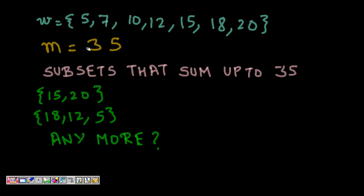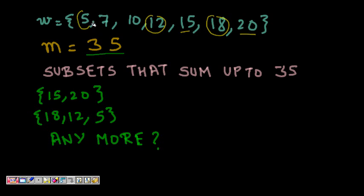For example, given numbers 5, 7, 10, 12, 15, 18, and 20 with sum equal to 35, we need to find if any subset sums to 35. By inspection, 15 and 20 sum to 35, and 18, 12, and 5 also sum to 35. We need a systematic code or procedure to find all such subsets.